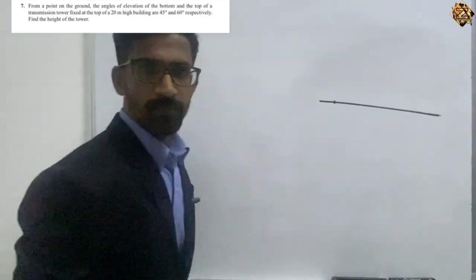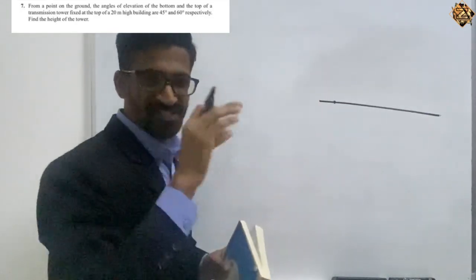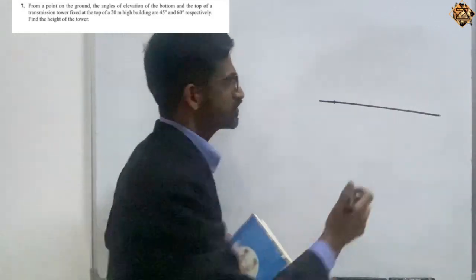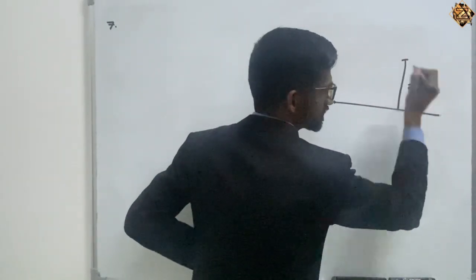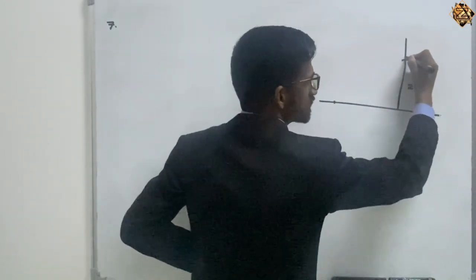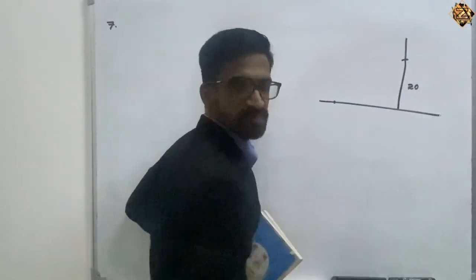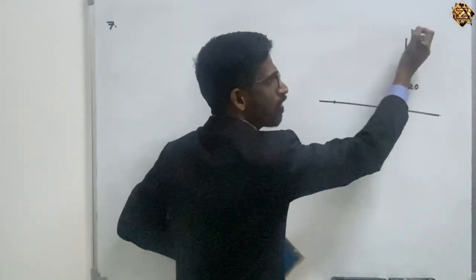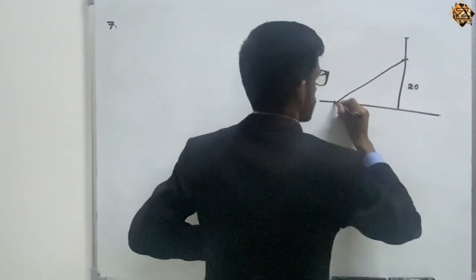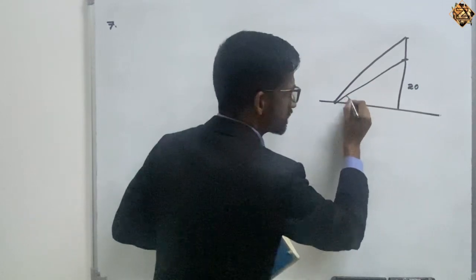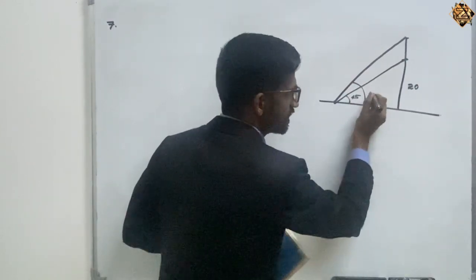From a point on the ground, the angles of elevation of the bottom and top of the transmission tower — the transmission tower is fixed at the top of a 20 meter high building. So first we have to draw a 20 meter high building on the top of which a transmission tower is fixed. The angle of elevation of the bottom of the transmission tower is 45 degrees and the top is 60 degrees respectively.